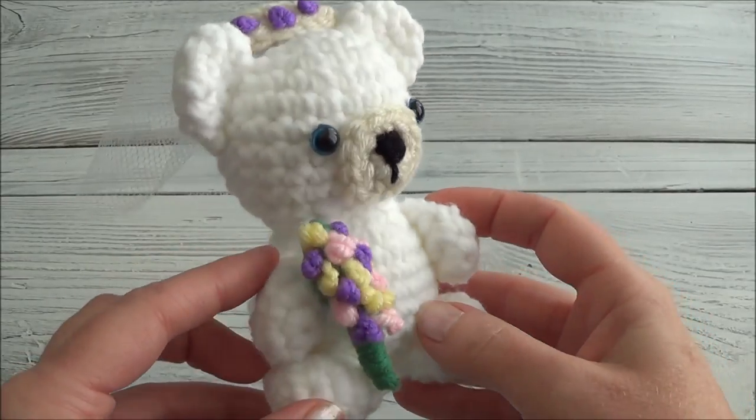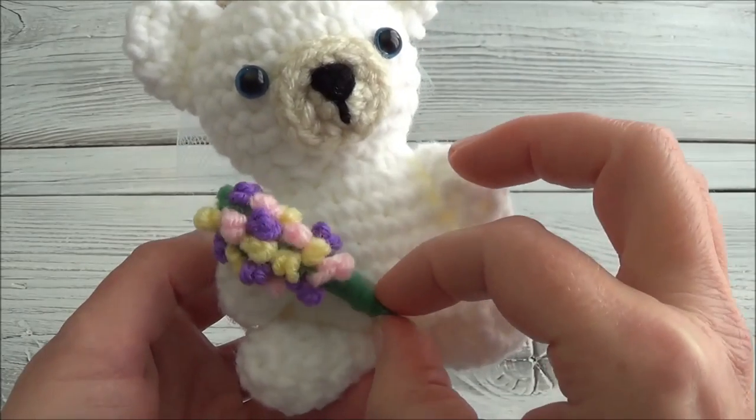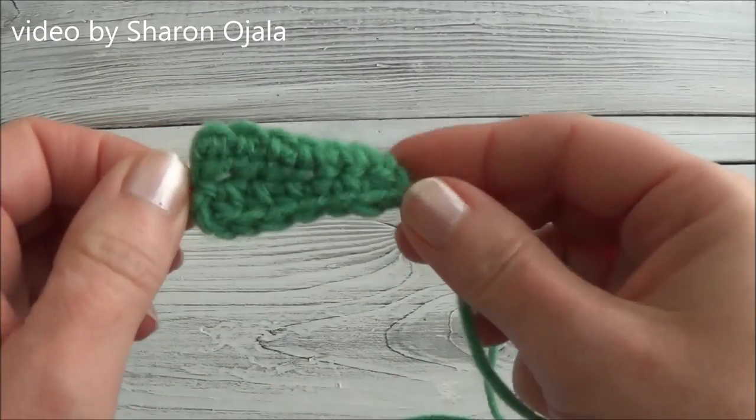Hi guys, welcome to part one of the wedding accessories for the crocheted mini bear. In this video we're making a little bouquet. To make your little bouquet of flowers we're going to start with a piece that looks like this.